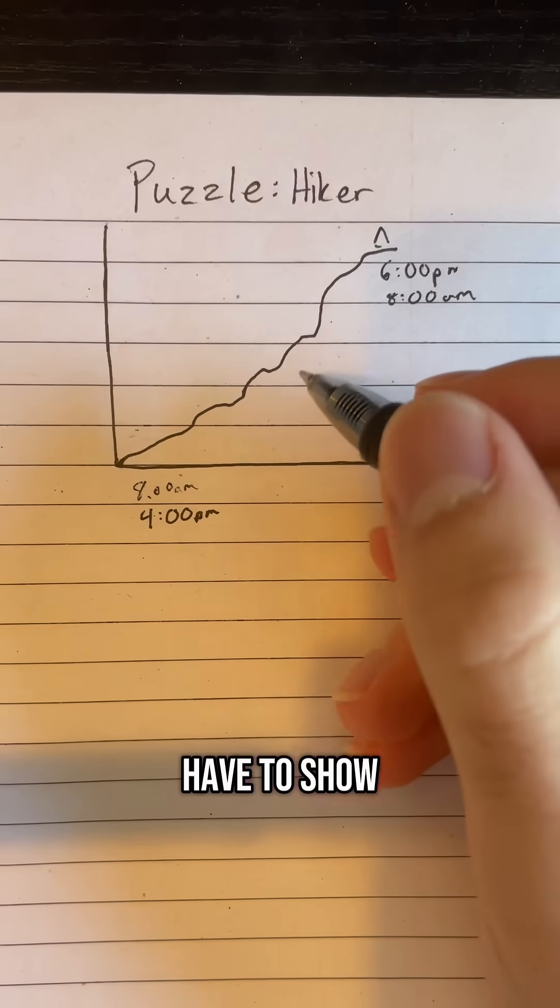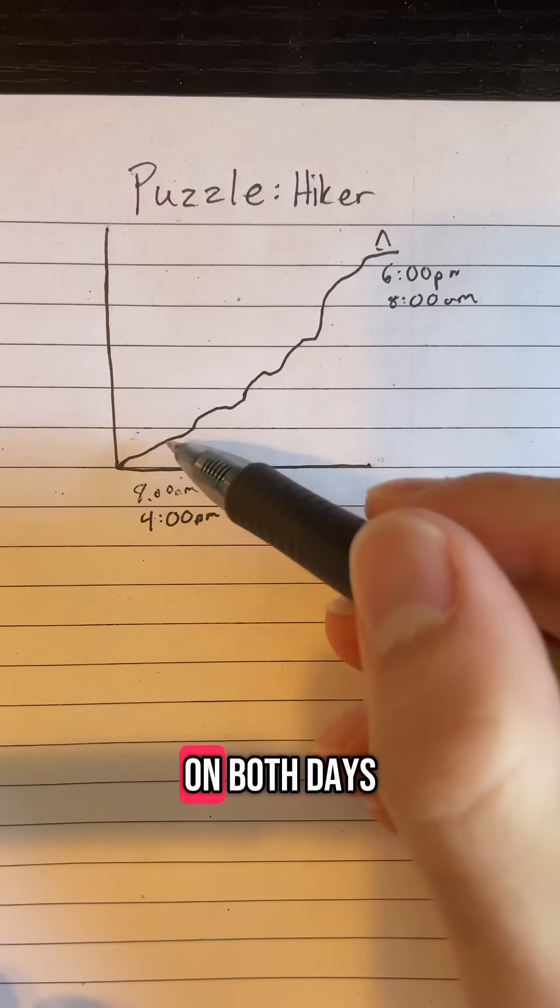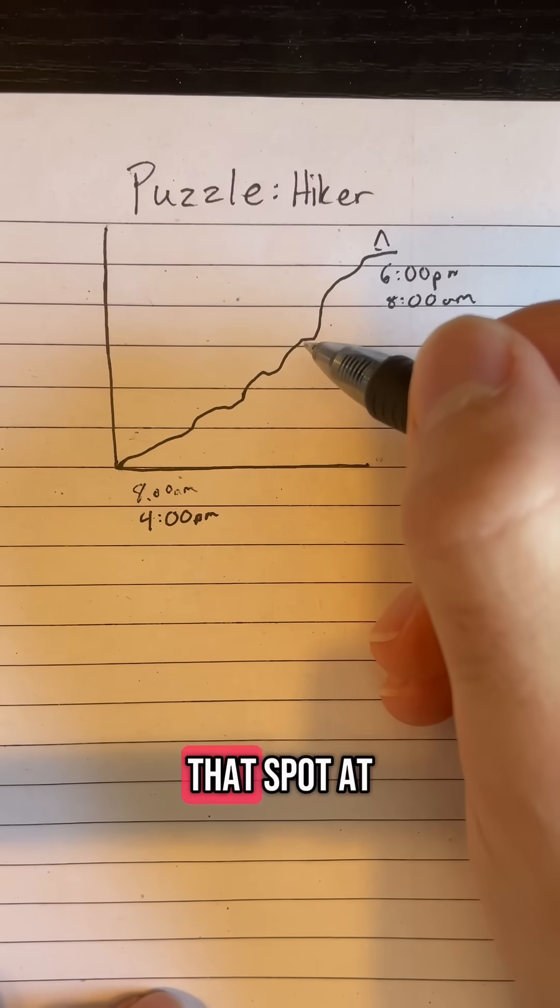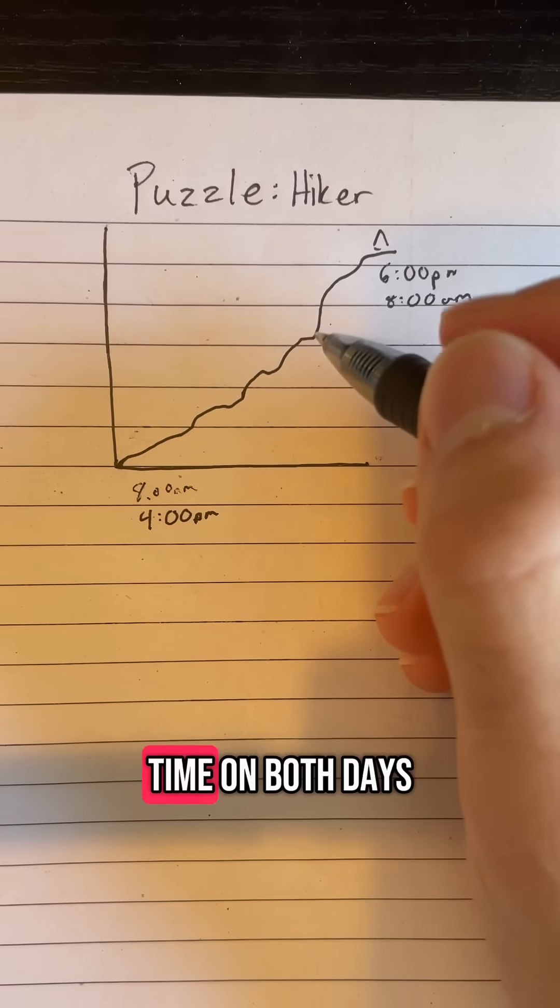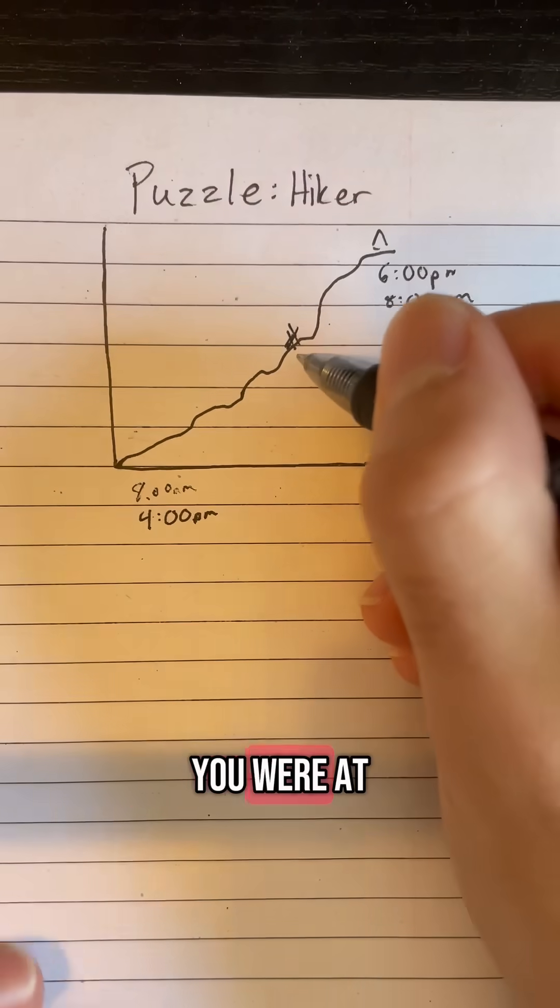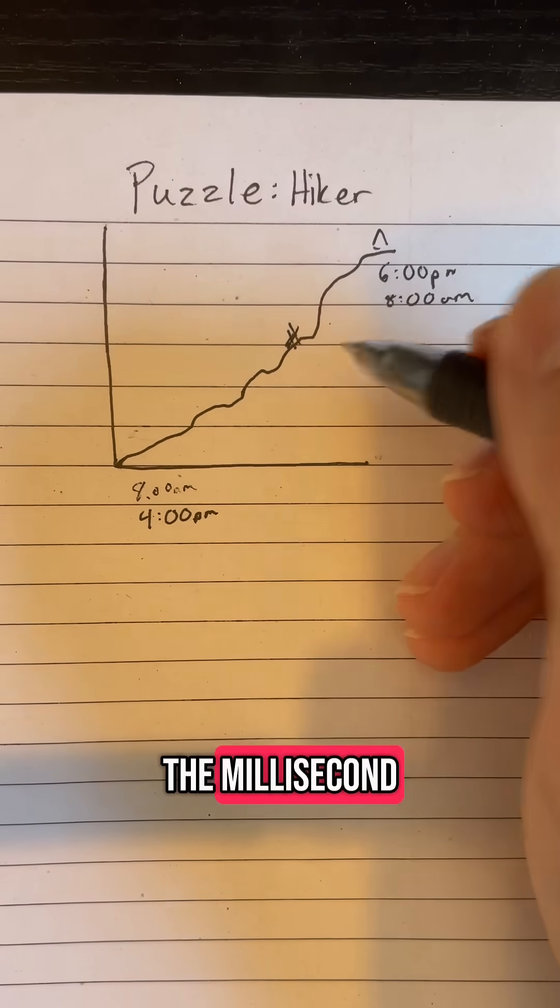Now the puzzle is that you have to show that on the mountain somewhere, there must exist a spot where on both days, the day you were going up the mountain and the day you were going down the mountain, you were at that spot at the exact same time on both days. So for example, say the spot was here, and you were at this spot on both days at say 2:15 down to the millisecond.